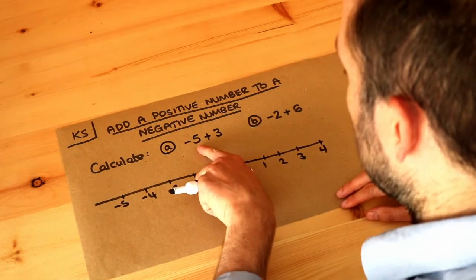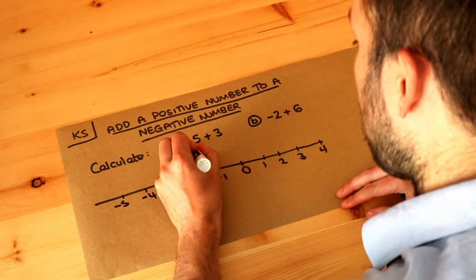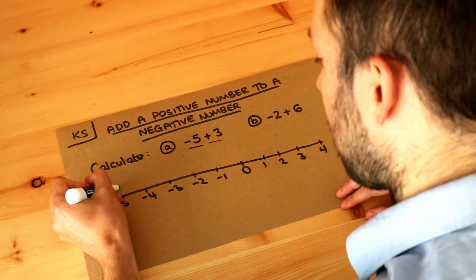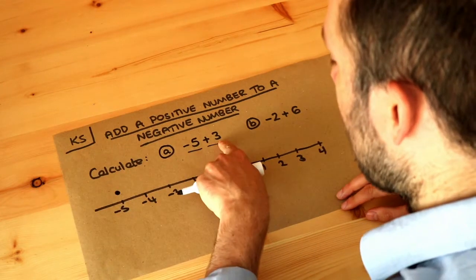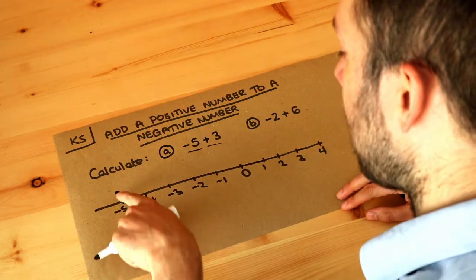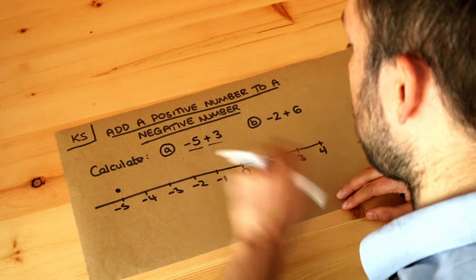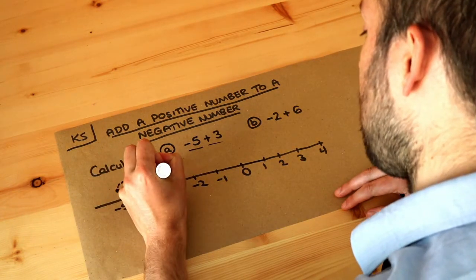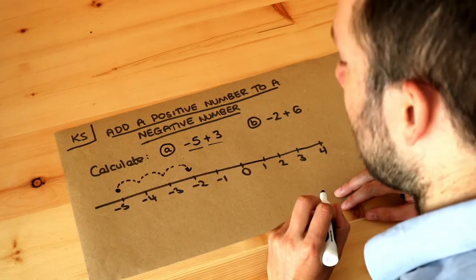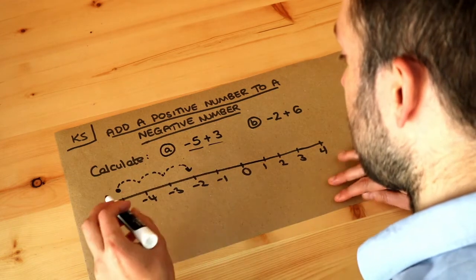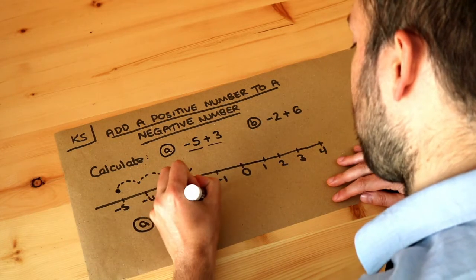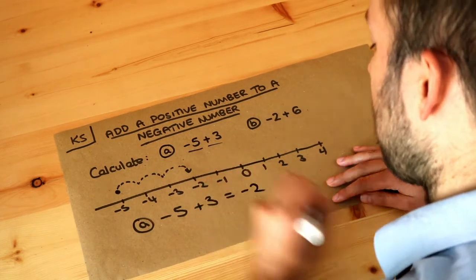Now let's start with this first question. We've got minus 5 and we're adding 3 to it. So we're going to start at minus 5, which is here, and we're going to add 3. Now as we add 3, we go up the number line to the right. So we're adding 1, we're adding 2, we're adding 3, and that gets us to minus 2. So the answer to the first one: minus 5, when we add 3, we end up at minus 2.